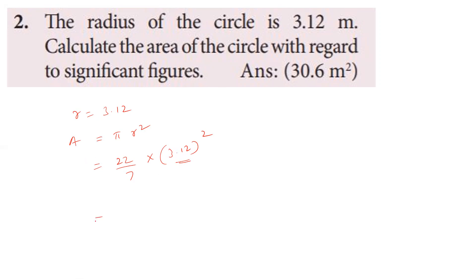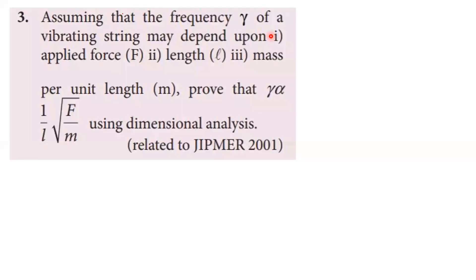The answer should have 3 significant figures. If we simply calculate it, we get 30.594. Now rounding to 3 significant figures, we get 30.6 square meters. The answer is 30.6 square meters, expressed to 3 significant figures.